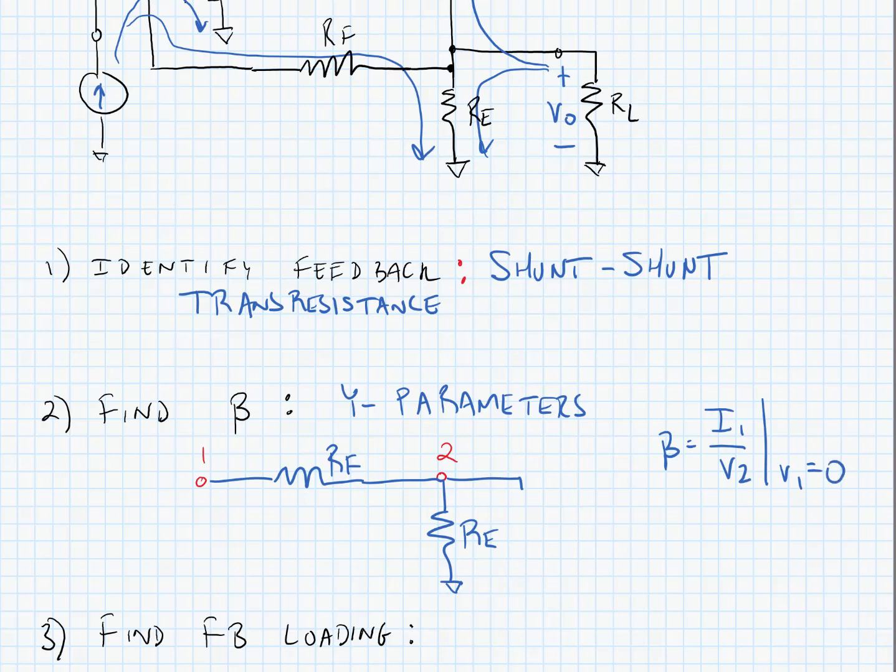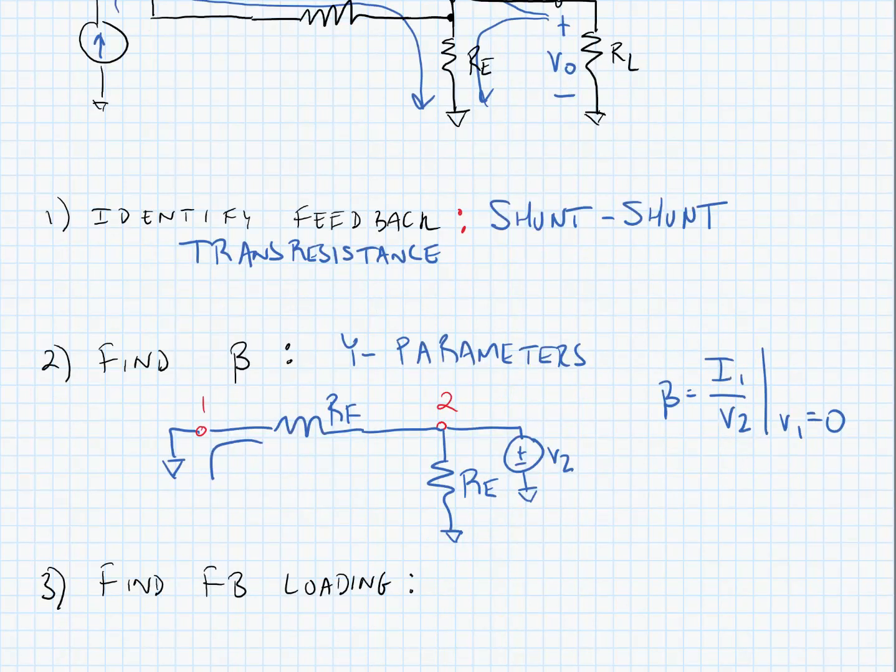We're going to short v1 when v1 equals 0. We're going to put a test voltage source at v2 and measure the current that flows into the short circuit. In fact, beta is equal to 1 over RF.